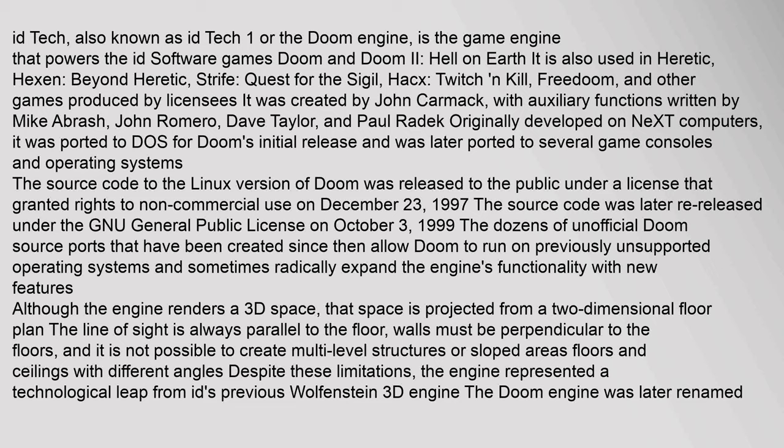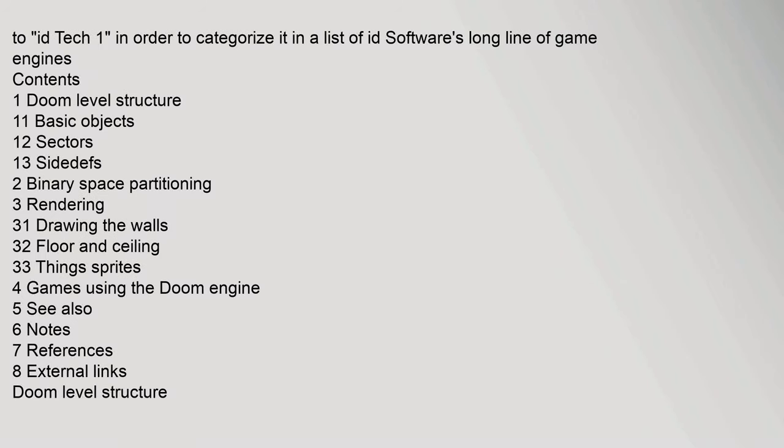The dozens of unofficial Doom source ports that have been created since then allow Doom to run on previously unsupported operating systems and sometimes radically expand the engine's functionality with new features. Although the engine renders a 3D space, that space is projected from a two-dimensional floor plan. The line of sight is always parallel to the floor, walls must be perpendicular to the floors, and it is not possible to create multi-level structures or sloped areas. Despite these limitations, the engine represented a technological leap from id's previous Wolfenstein 3D engine.